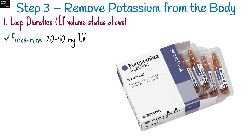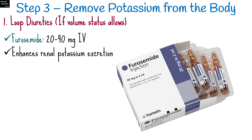The third step is the removal of potassium from the body. Loop diuretics are given if volume status allows — 20 to 40 mg IV furosemide is administered. It enhances renal potassium excretion.